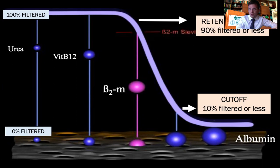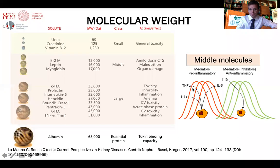When the curve starts to bend, that point is considered the retention onset. This means molecules bigger than this threshold are extracted less than 90%. The other point is the cutoff — molecules bigger than this point are filtrated less than 10%. We will focus on middle molecules, which are molecules bigger than 500 daltons up to 50,000 daltons.